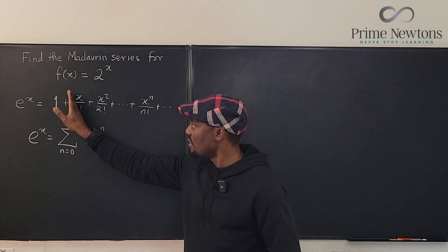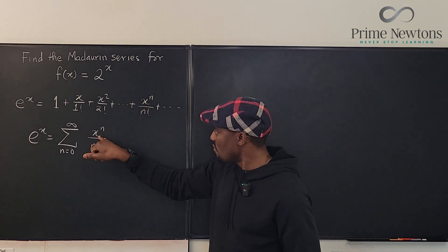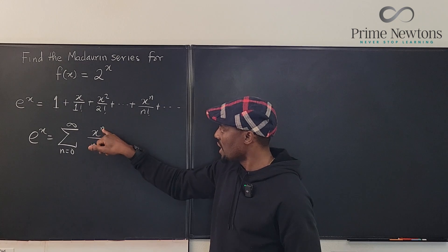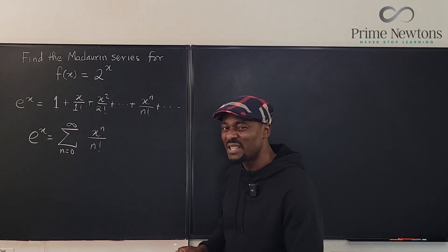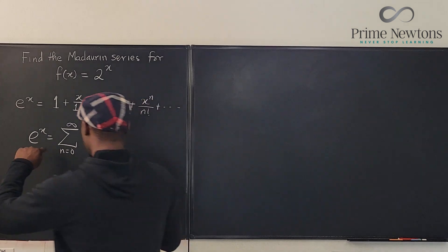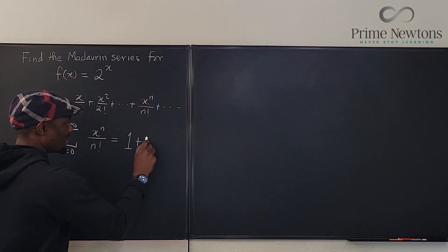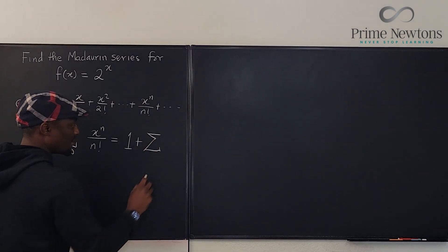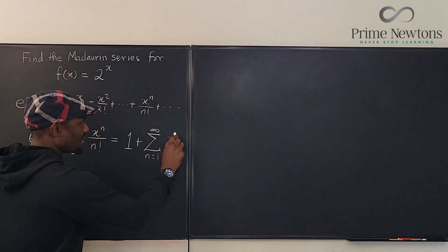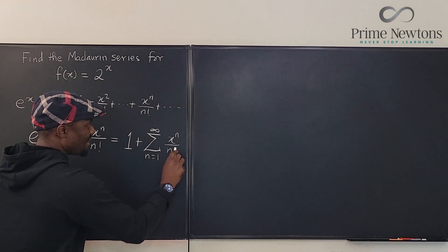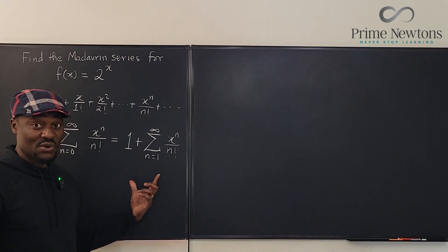So we're going to start from n equals one and we don't have to deal with zero raised to power zero. Even when we plug in zero, it's going to be zero raised to power one, zero raised to power two, but the zero-to-zero case is not there. So we might as well say this is the same thing as one plus the sum from n equals one to infinity of x to the n over n factorial. This is the better version we're going to be using for the Maclaurin series.